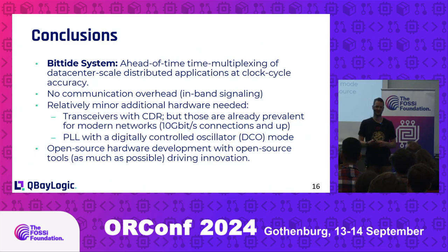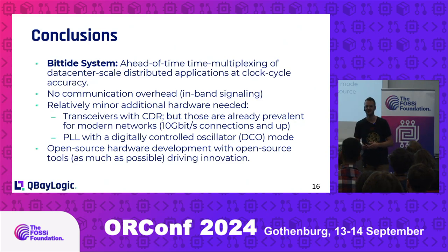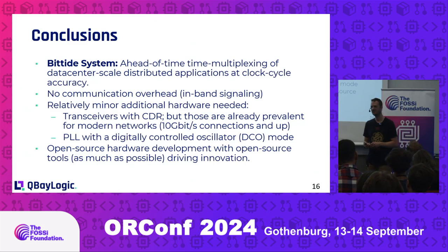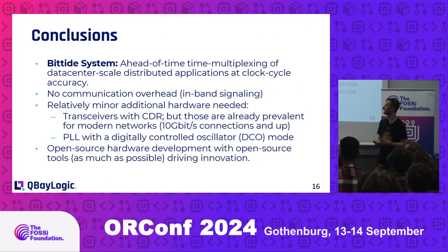In conclusion, what the BitTide system gives us is we can now do ahead-of-time time multiplexing at data center scale, at clock cycle accuracy, with no communication overhead. We just send messages and the FIFO is always there in the 30G links. All we need to do is observe the clocks.